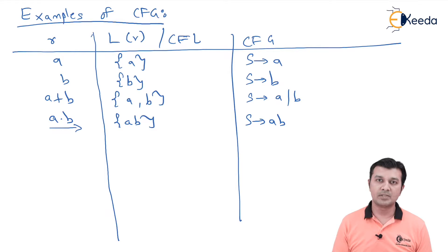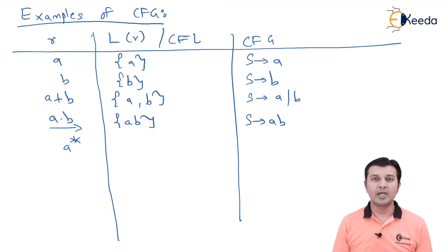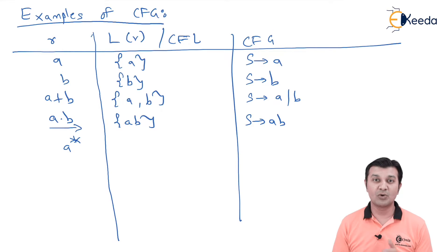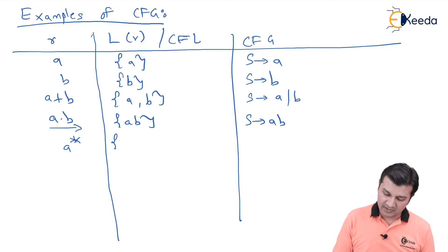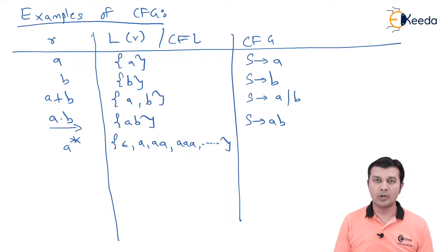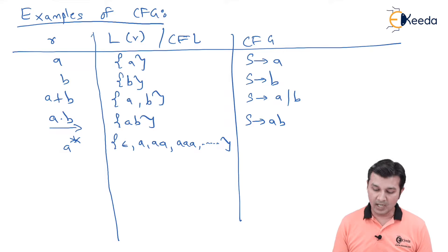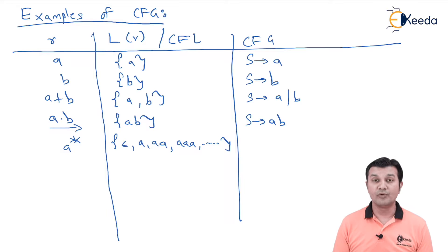Now let's look at more complicated examples. For 'a*', we know it means zero or more repetitions of 'a' — also called the Kleene closure. The context-free language is {ε, a, aa, aaa, ...} and so on. Pause and think: what should the CFG for this be? We want a grammar capable of regenerating the same string again and again.